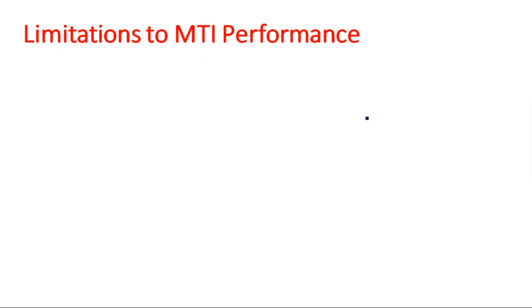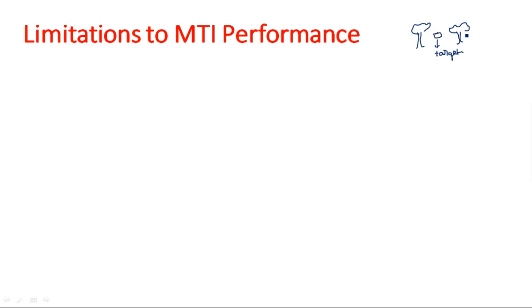MTI radar is especially designed for the detection of moving targets among a large number of clutters. Clutter is nothing but a stationary target. Consider two trees and a moving target — that moving target is what we need to detect. When we transmit a signal onto this area, we receive echo signals from the trees and the original moving target. If the two trees are stationary with no movement, we can clearly extract the moving target information from the MTI radar.